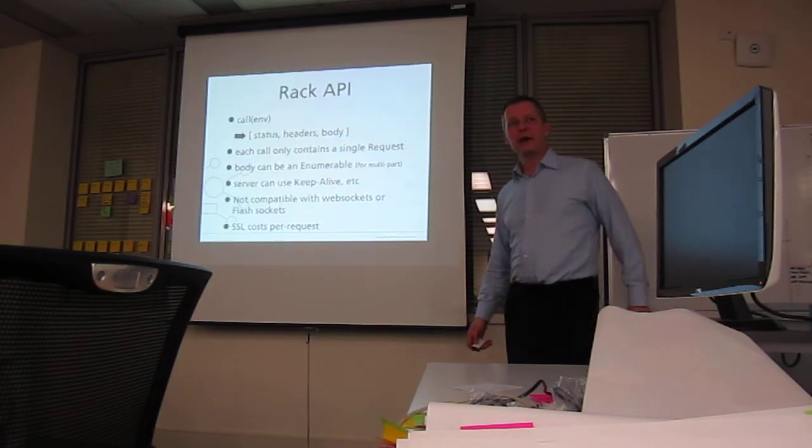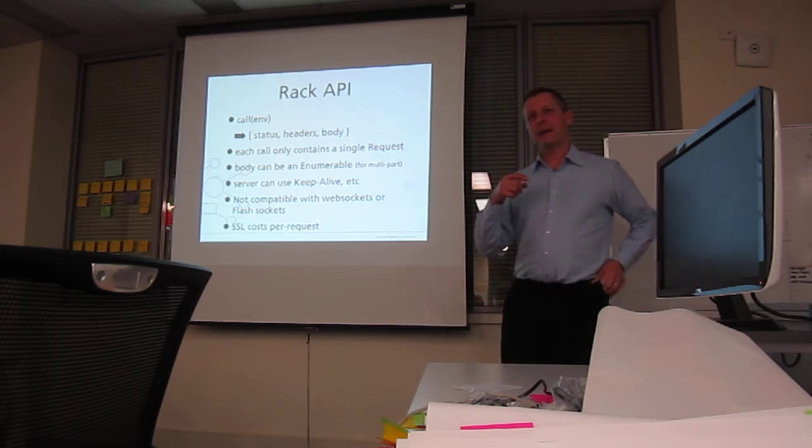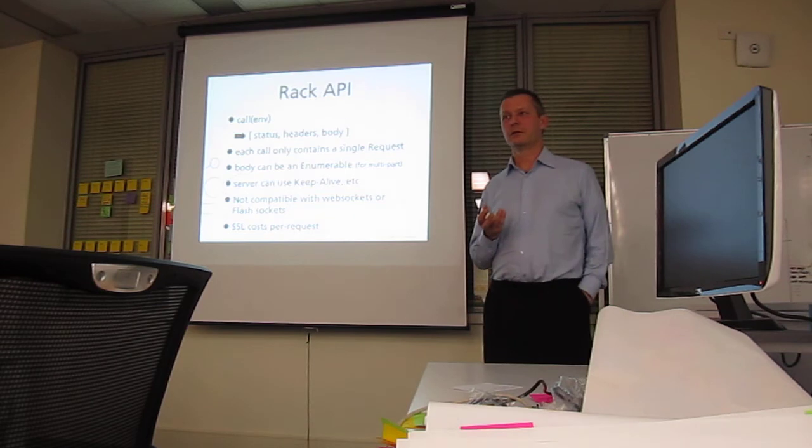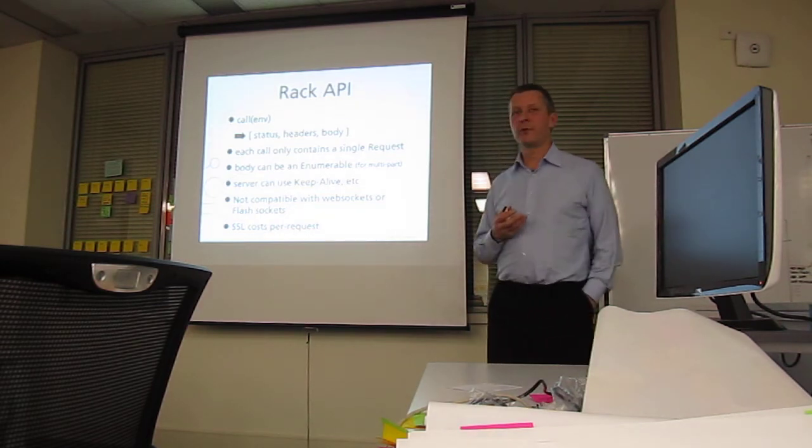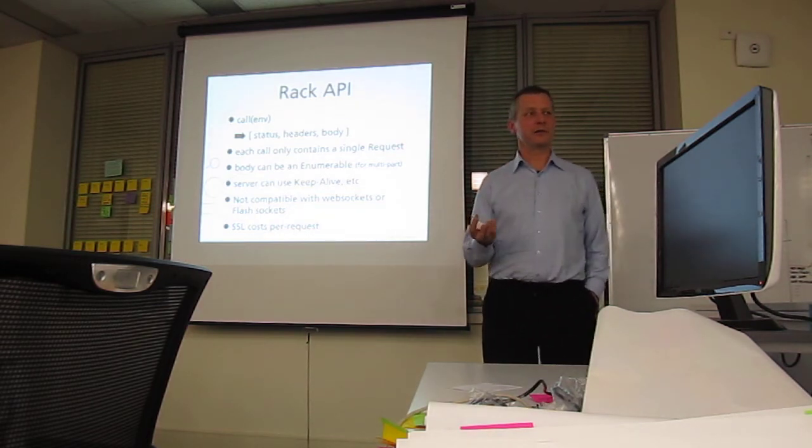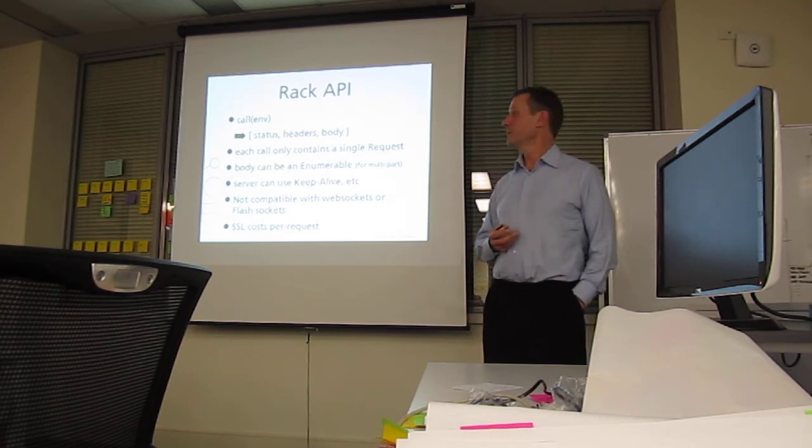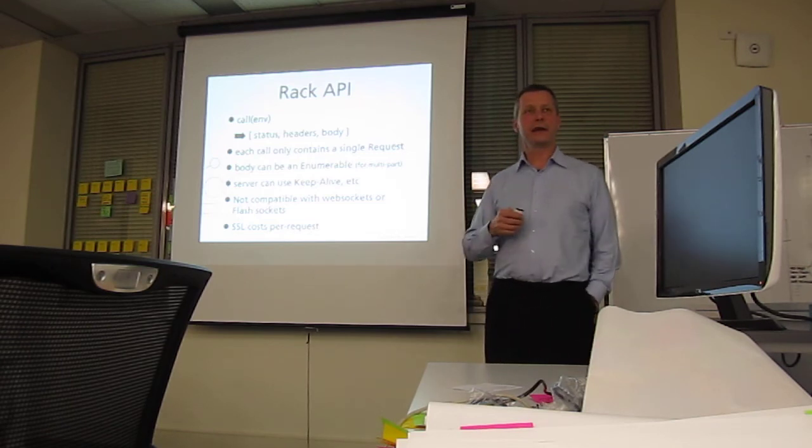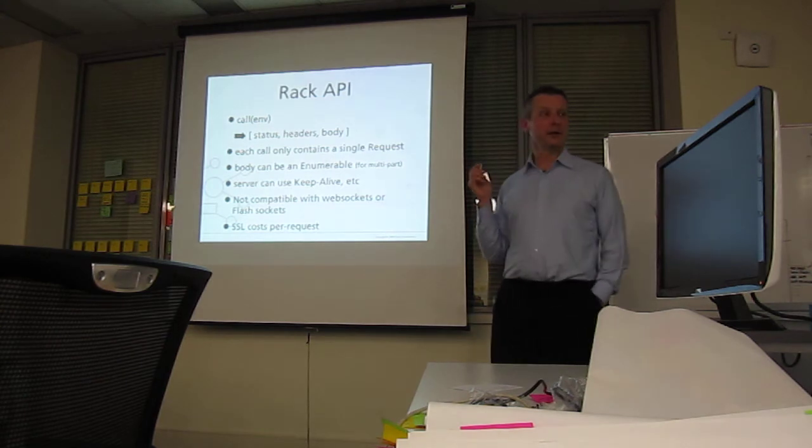So, with the Rack API, basically a Rack application has to support really this one API, which is call. And the request is passed in as part of the environment of the call. And when it's got a response, it can return a three-part thing, which is the status code, you know, 404 or 200 or whatever. A hash containing some headers, which is part of the HTTP response. And a body object.